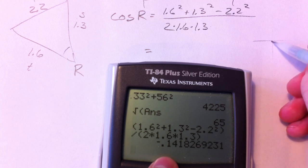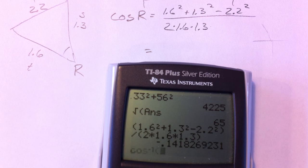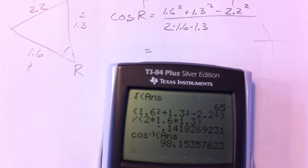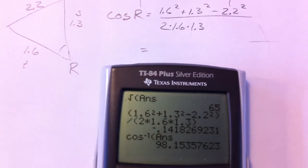Cosine values are negative when you're in the second quadrant. So we know we have an obtuse angle here. If we do inverse cosine of our answer, you get 98.2 degrees.